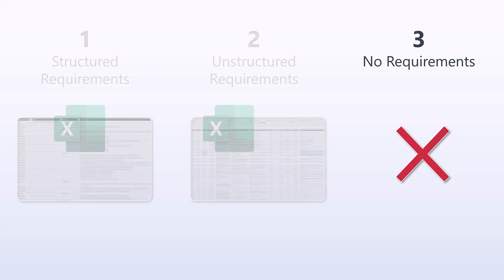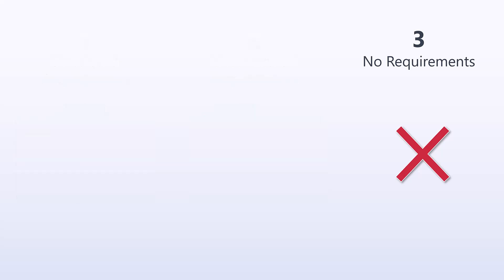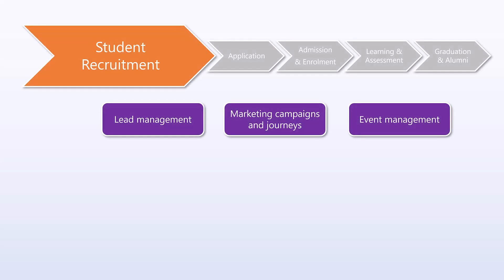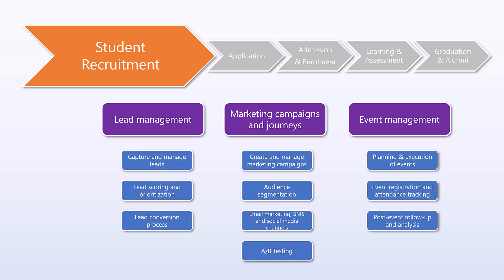Scenario number three is about effectively not having requirements at all, or having only very high-level requirements. What you end up doing in scenario three is exactly the same as scenario two — going through and finding your epics and features — but then you have to take one step further and elicit with your stakeholders the individual requirement lines or user stories that would fit within each of those features and epics. Once that's done, you can easily import your Excel sheet or your backlog into Azure DevOps Boards. I have another video covering how to import items using the import CSV feature in Azure DevOps.